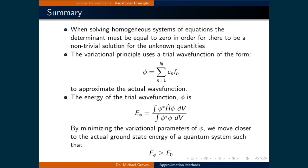The variational principle uses a trial wave function, phi, which is a sum of functions times a constant in order to approximate the actual wave function. The energy of the trial wave function, phi,